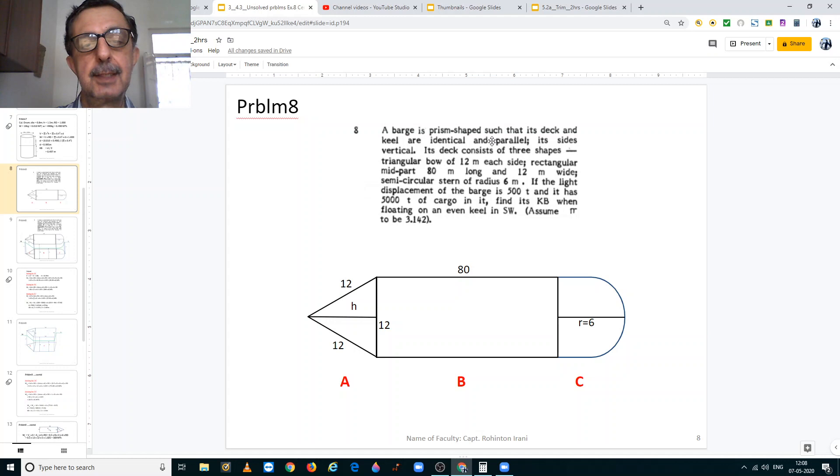Problem number 8 says that a barge is a bottom shape such that its deck and keel are identical and parallel. Its sides are vertical. Its deck consists of three shapes: triangle above,